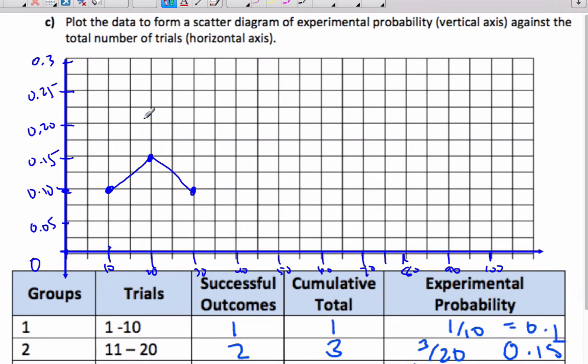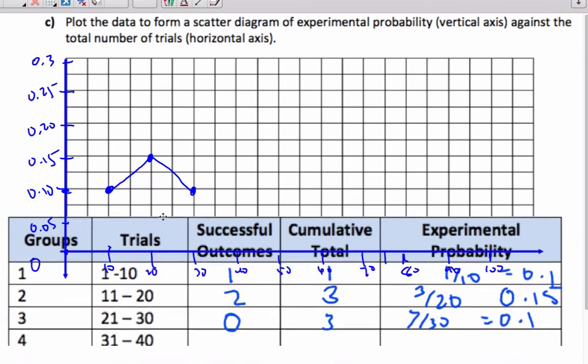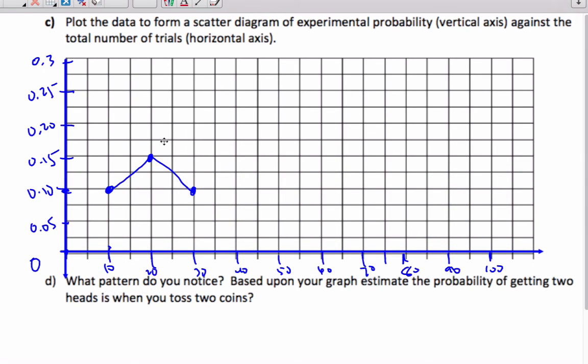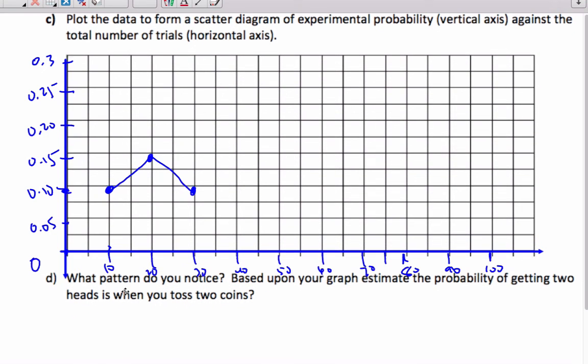Your values should look different because you're doing different outcomes. So take some time, and with yours, fill in the rest, do your table. And then based upon, do you notice a pattern? Hopefully the answer is yes. And you are going to estimate the probability of getting two heads based upon your simulation here. You should be able to have a value of that, and it should relate to your graph. I'm curious to know how yours look.